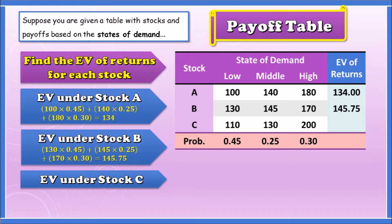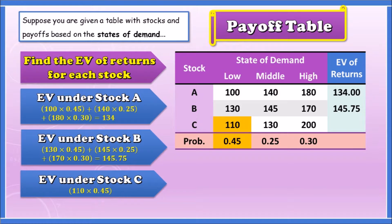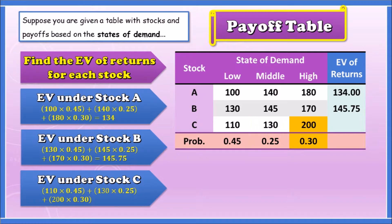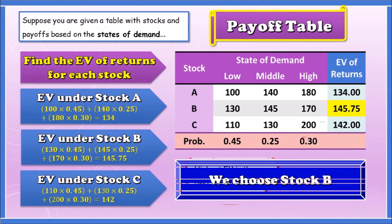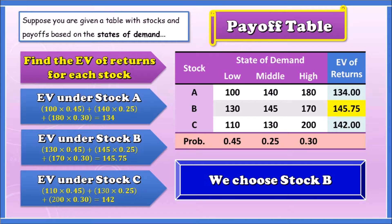Finally, for Stock C: 110 times 0.45, plus 130 times 0.25, plus 200 times 0.30, which gives us 142. Since we want the highest expected value, Stock B at 145.75 is the highest EV and therefore the best decision. So we choose Stock B.